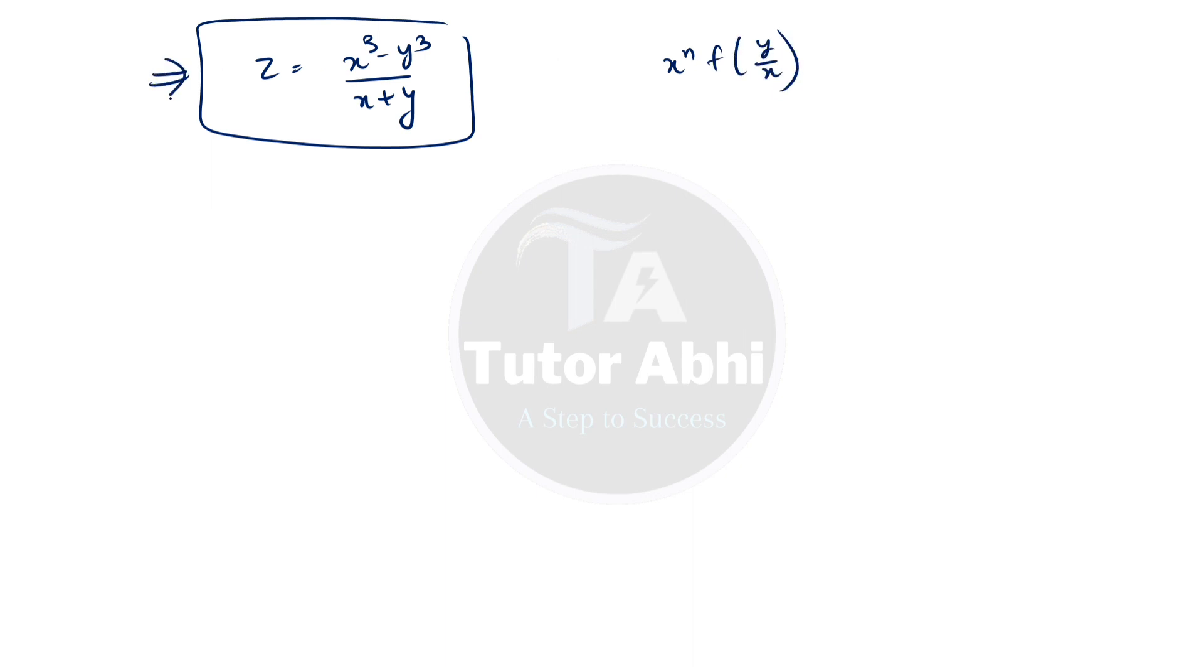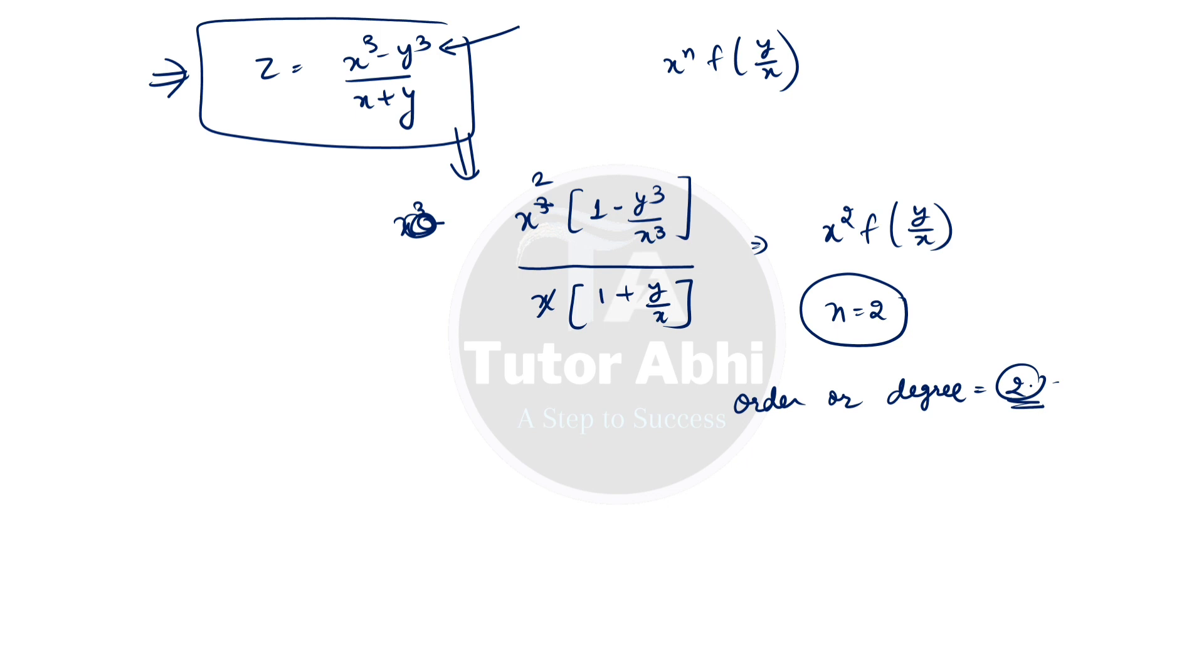Now I will discuss this example. The example is simple. Suppose I have the equation z equals x cube minus y cube upon x plus y. This is a normal z equation. We have to change it to the function of y upon x form. From the numerator, we take x cube common, giving us x squared times one minus y cubed over x cubed, divided by x times one plus y over x. This gives us x square function of y upon x, so the order or degree is 2.